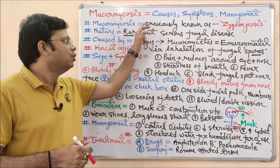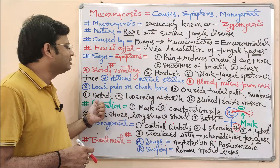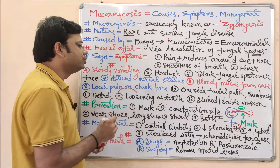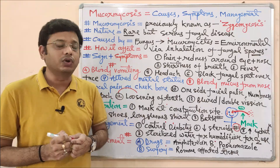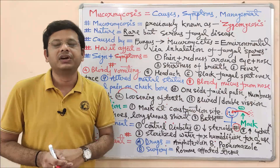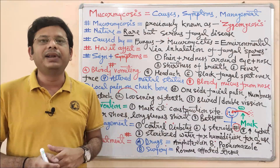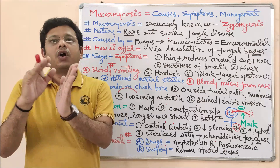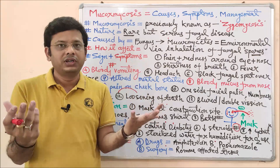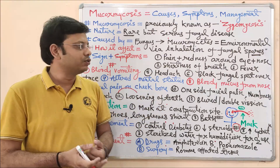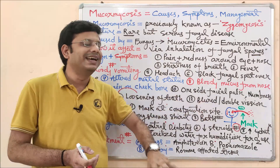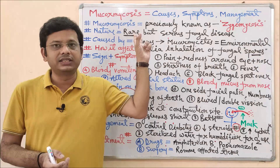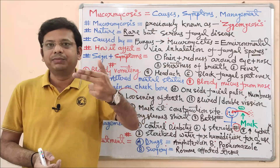Toothache is another symptom — pain in the tooth can result in loosening and decay of the tooth. Blurred vision or double vision may also occur. Blurred vision means unclear vision for unknown or known reasons. In mucormycosis, the person may see two images of the same object at the same time, which is called double vision.